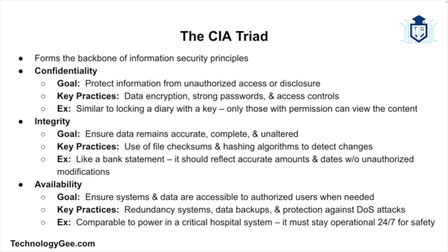Availability ensures that data and systems are accessible to authorized users when needed. This means maintaining system uptime and avoiding disruptions caused by hardware failure, cyber attacks, or natural disasters. Examples include redundancy systems, data backups, and denial of service protection measures. Consider availability like ensuring the power is always on in a critical hospital system — it must be operational 24/7.